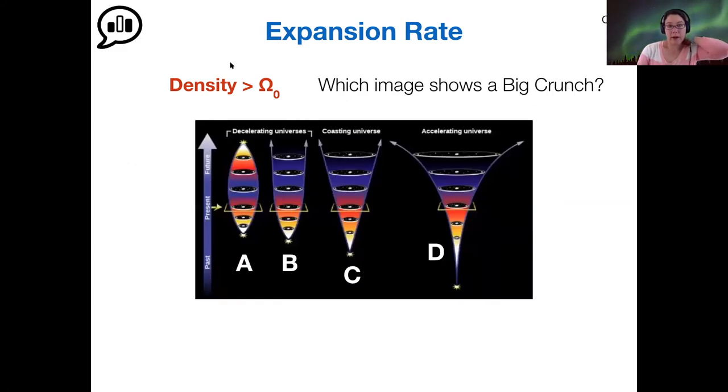So considering our higher than critical density universe ends in a Big Crunch, which image should this correspond to? Yep. So universe A is the only one that ends up back at the same singular point. And so image A would be the Big Crunch universe. So this is a decelerating universe. It has higher than the critical density.